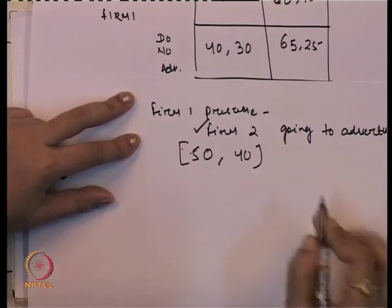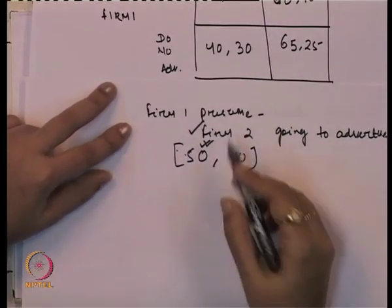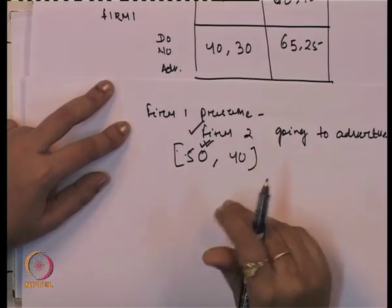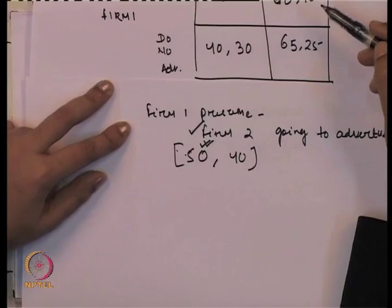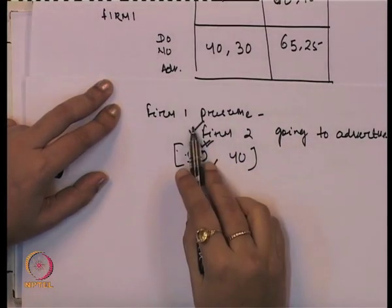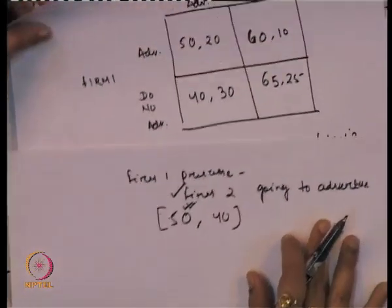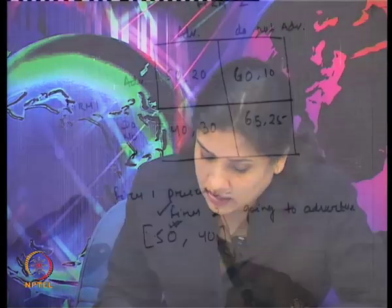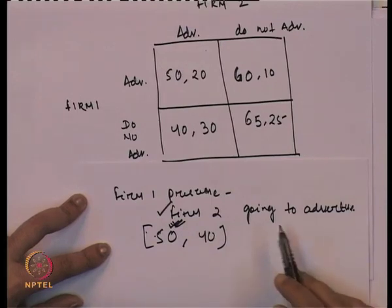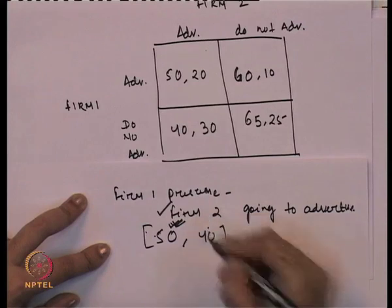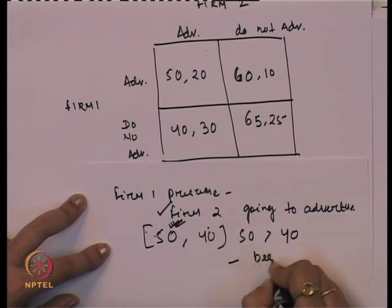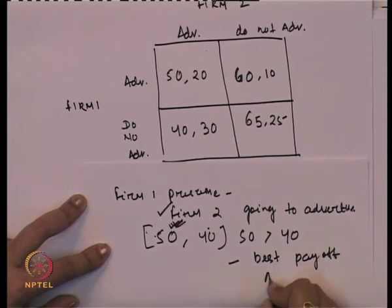What is best for firm 1? It is best to go for advertisement, because the optimal outcome is an increase in market share, and market share increases when firms go for advertisement. So if firm 1 always presumes that firm 2 is going to advertise, and if firm 2 advertises, then firm 1 advertising gives a market share of 50, whereas not advertising gives only 40. Since 50 is greater than 40, it is always the best outcome to go for advertisement.